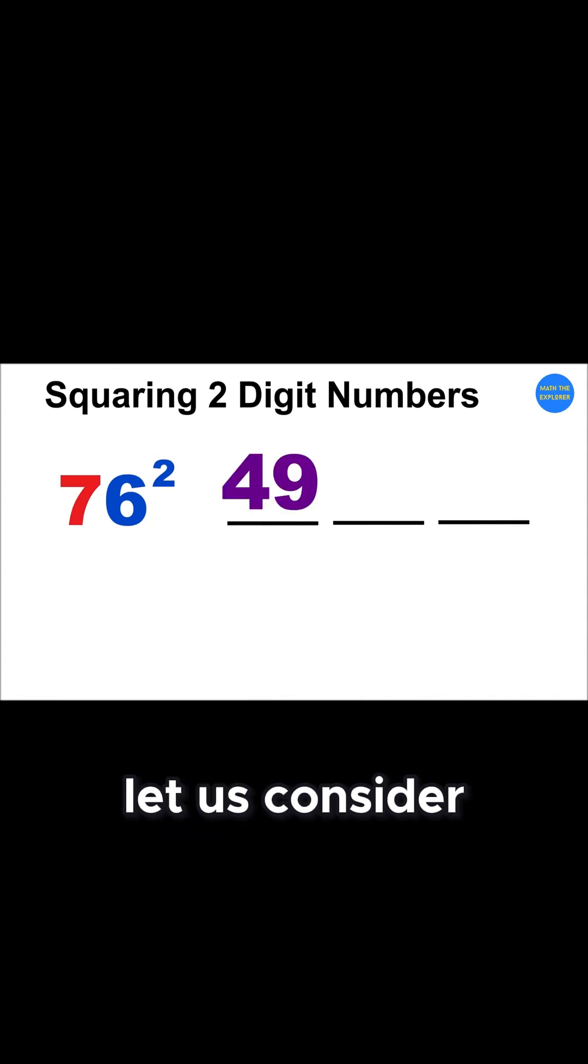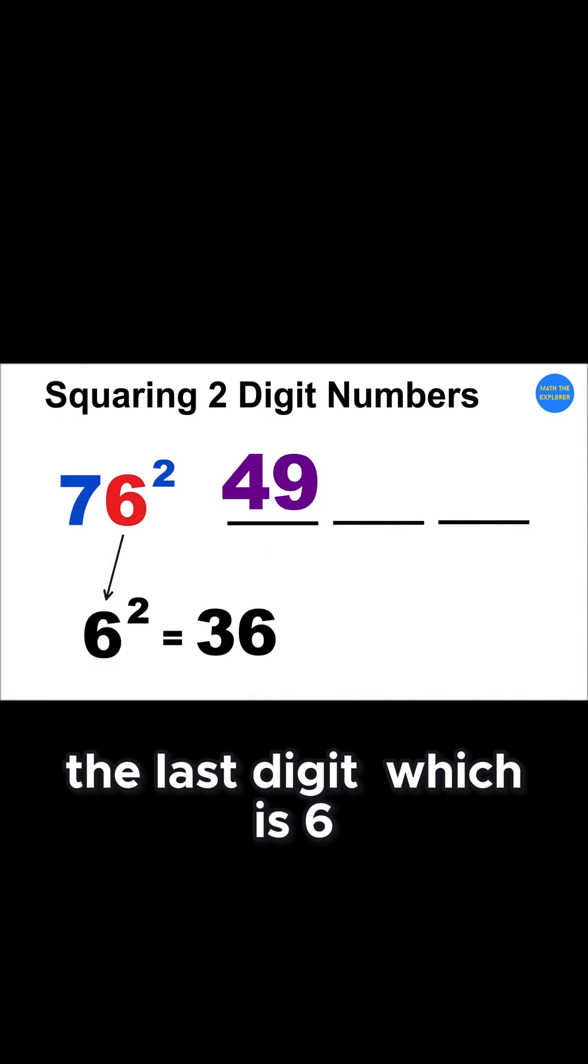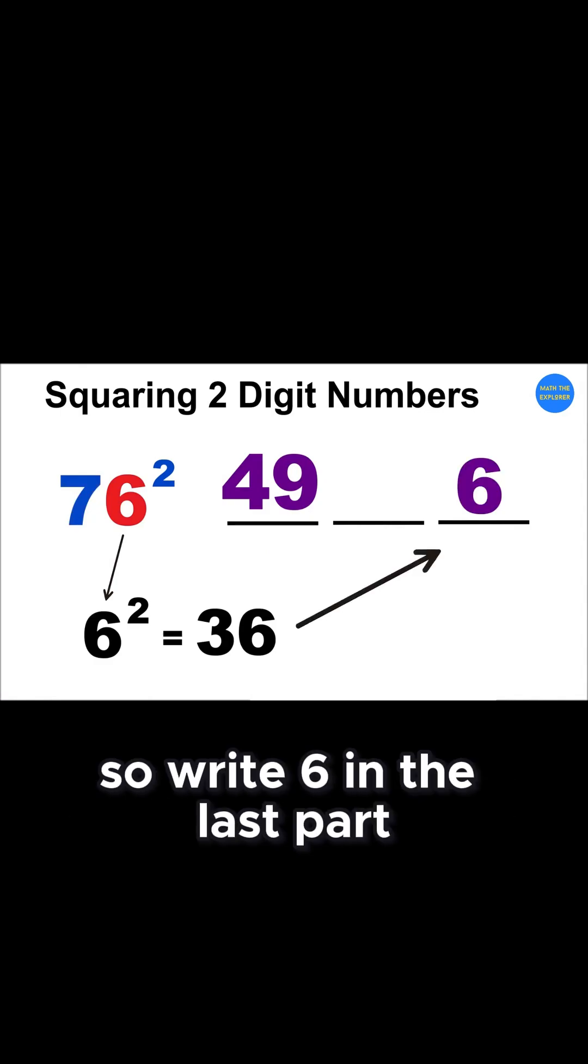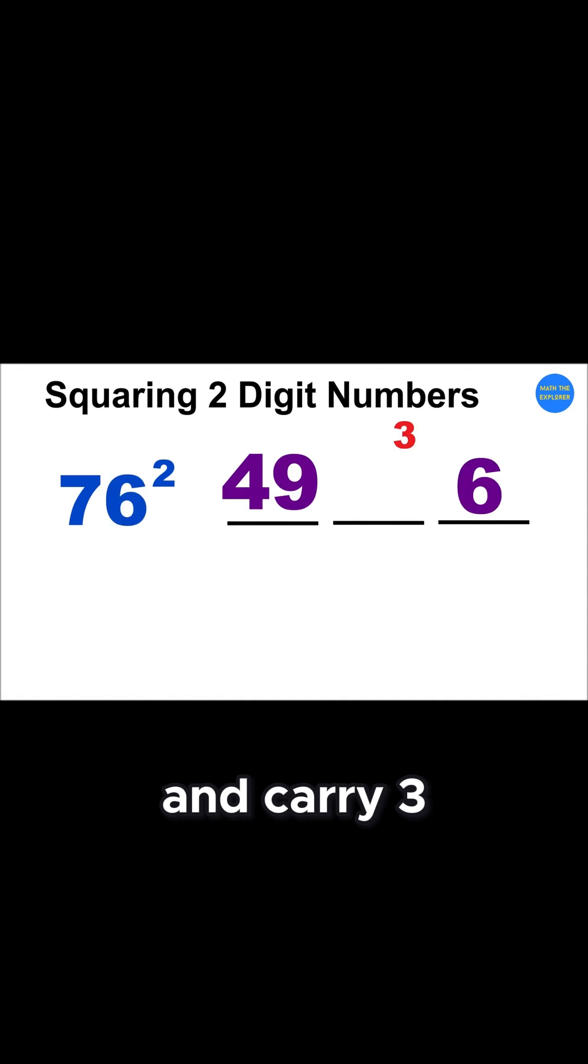Next, let us consider the last digit, which is 6, whose square is 36. So, write 6 in the last part and carry 3 to the middle part.